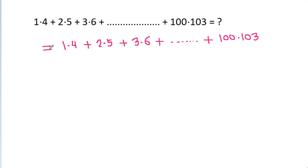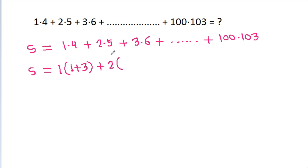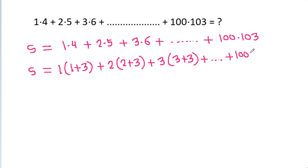Suppose it is equal to S. Then S is equal to: 1 times 4 is (1 plus 3), plus 2 times 5 is (2 plus 3), plus 3 times 6 is (3 plus 3), plus up to 100 times (100 plus 3).